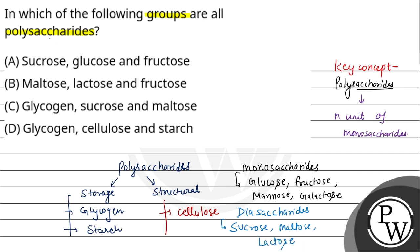Now see, they asked which three are polysaccharides. So sucrose here is disaccharides, glucose and fructose are monosaccharides. Maltose here is disaccharides, lactose is disaccharides, but fructose is monosaccharides.